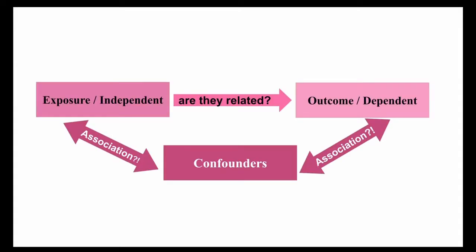First, we need to define the independent and dependent variables and how they are related. For example, in a study of how different doses of a drug affect the severity of symptoms, a researcher could compare the frequency and the intensity of symptoms when different doses are administered. Here the independent variable is the dose and the dependent variable is the frequency or intensity of symptoms. The confoundings, however, are whether there are any comorbid diseases or allergic reactions that interfered with this drug during this process.